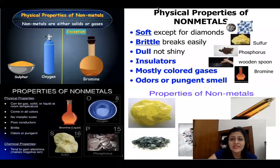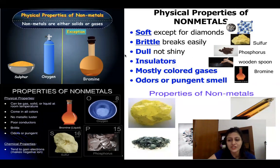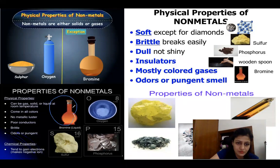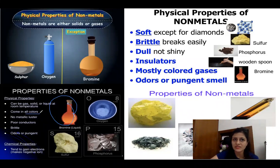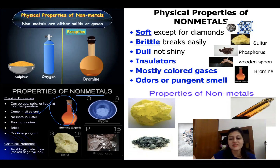Now let's talk about the physical properties. Regarding states, non-metals exist mostly in solid or gaseous form, but there is one exception present in liquid form — that is bromine. Non-metals are various colors, whereas metals are more gray, with exceptions like gold and copper. Non-metals are poor conductors of electricity, brittle, easily melt, and their tensile strength is not very strong.